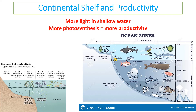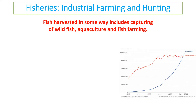The continental shelf is the most productive area because there is more light, therefore more photosynthesis, and plants have a higher level of productivity. This is obviously impacting things like fishing, which is a particular area of concern because of its lack of sustainability.